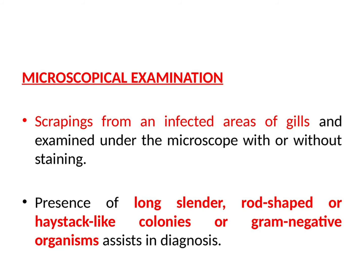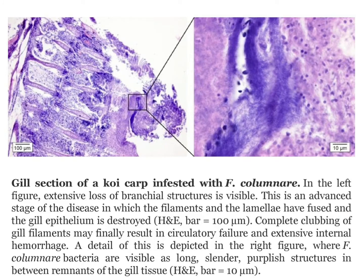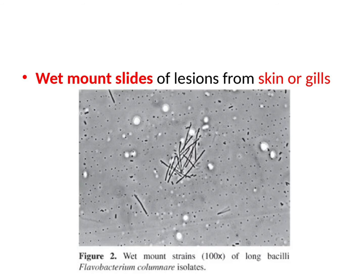Presence of long slender rod-shaped or haystack-like colonies of gram-negative organisms assists in diagnosis. In this picture, you can see the gill section of a koi carp infested with Flavobacterium columnare. In the left figure, extensive loss of branchial tissues is visible in an advanced stage of the disease where filaments and lamellae have fused and the gill epithelium is destroyed. Complete clubbing of the gill filaments may finally result in circulatory failure and extensive internal hemorrhage. A detail of this is depicted in the right figure, where bacteria are visible as long slender purplish structures between remnants of the gill tissue. Wet mount slides of lesions from skin or gills can also be used for diagnosis, showing long bacilli of Flavobacterium columnare isolates at 100x magnification.